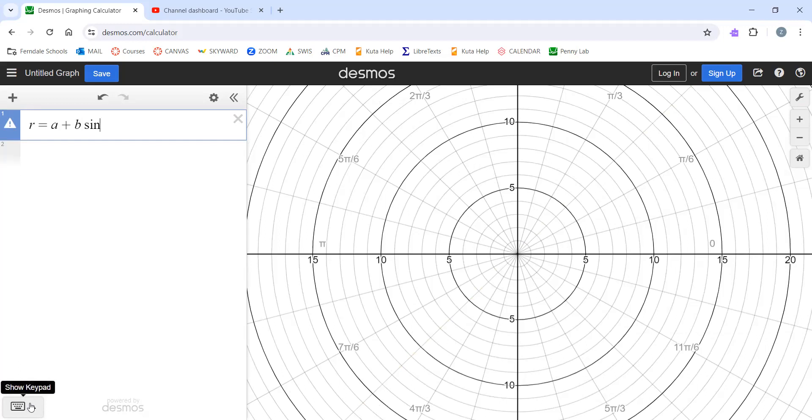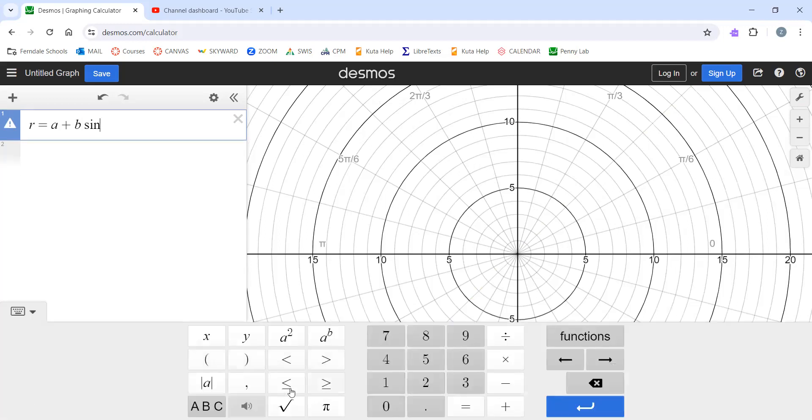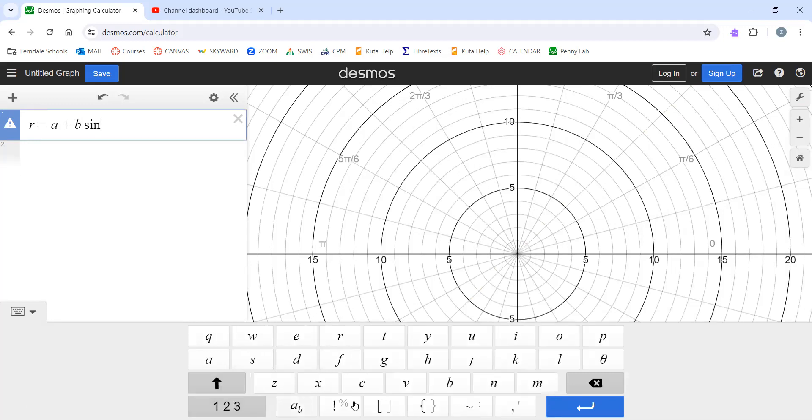And then I need theta, which I can find in the little keypad. If you click down in the lower left-hand corner, that'll pop it up. Click the ABC button and theta is over here on the right-hand side.